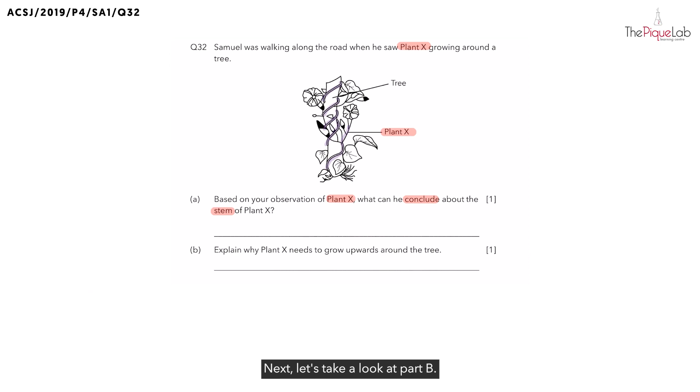Next, let's take a look at part B. So, for part B, they want you to explain why did plant X need to grow upwards around the tree? So, to answer this question, let's imagine if this plant was not climbing around a tree, but instead is lying flat on the ground. So, when plant X is growing upwards, what do you think it's trying to reach out for?